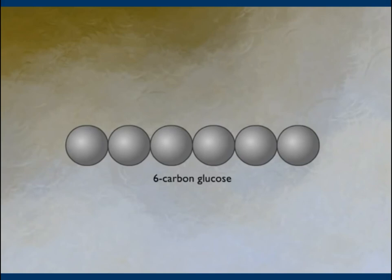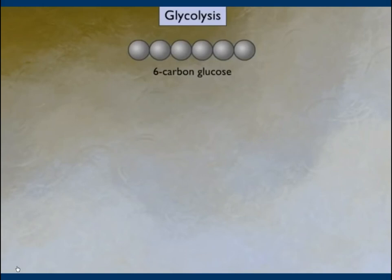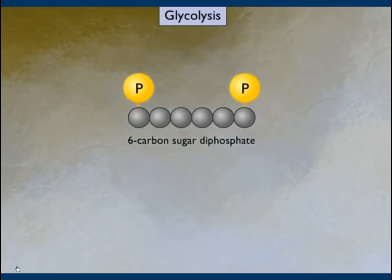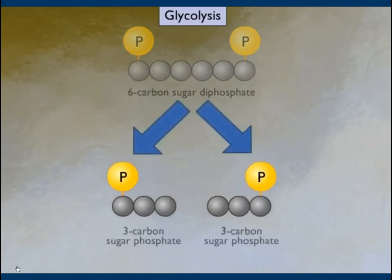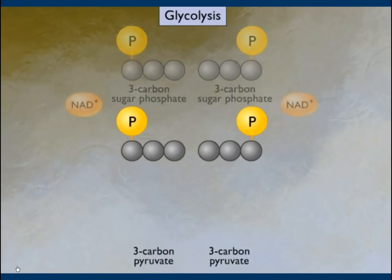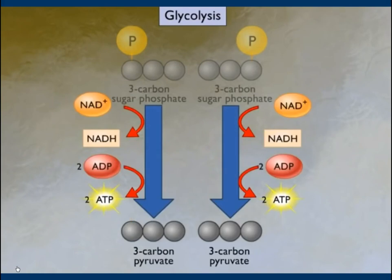Cells derive energy from the oxidation of nutrients such as glucose. The oxidation of glucose to pyruvate occurs through a series of steps called glycolysis. The energy released is used to form ATP, the energy currency of the cell. Two phosphates are added to glucose at the expense of two ATP molecules, producing a six-carbon sugar diphosphate and two ADP molecules. This molecule is split into two three-carbon molecules, each converted to pyruvate. Electrons are transferred to NAD+ to form NADH. Under aerobic conditions, pyruvate is further oxidized; under anaerobic conditions, it is converted into lactic acid.